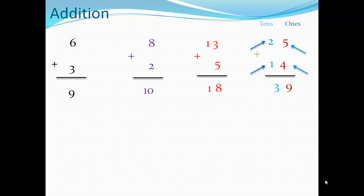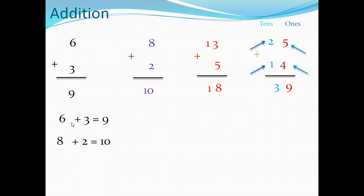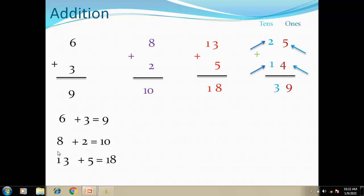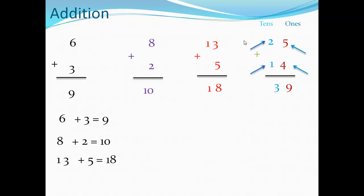These problems are solved using the vertical method — numbers above and numbers below. If I have another way of addition, the horizontal way, same steps apply: one digit plus one digit, count after the biggest number. Six plus three equals nine; eight plus two equals ten; thirteen plus five, count after the biggest number thirteen, the answer will be eighteen.